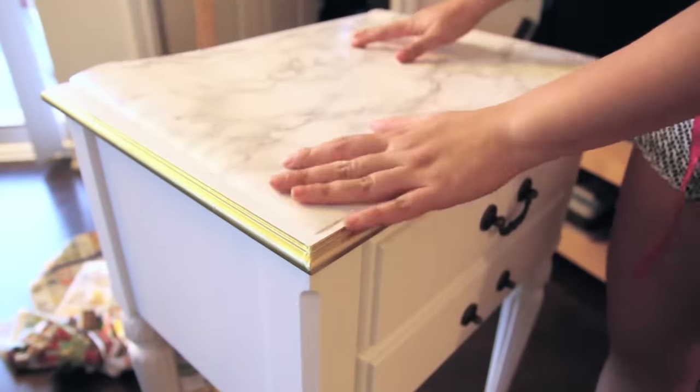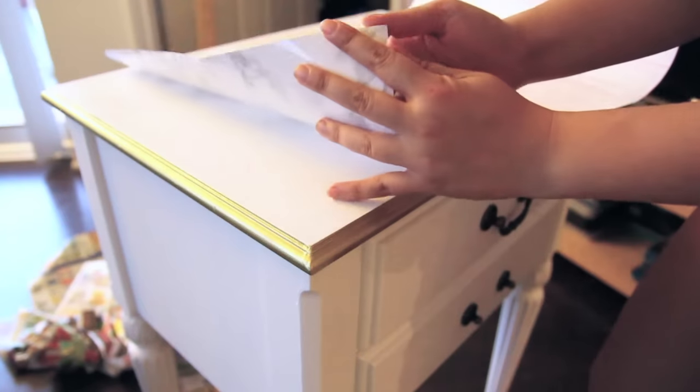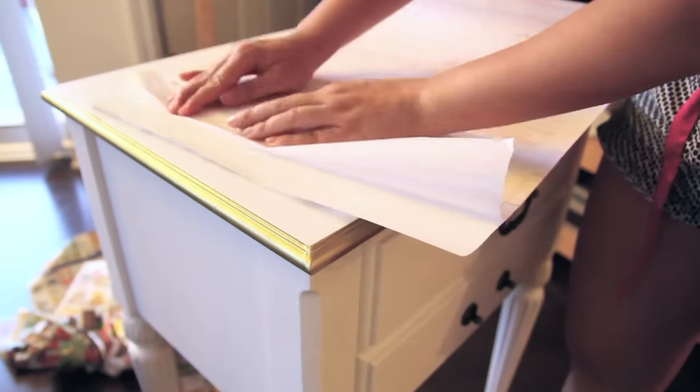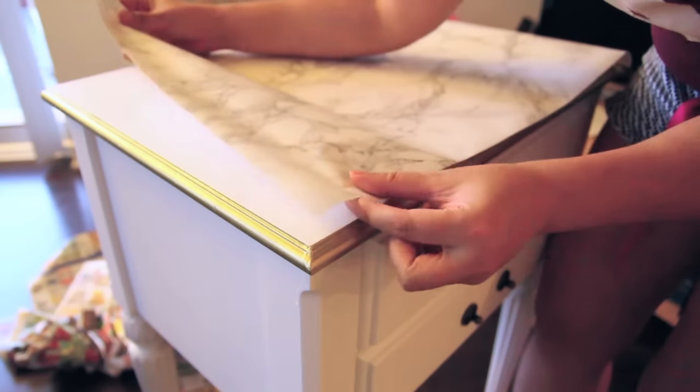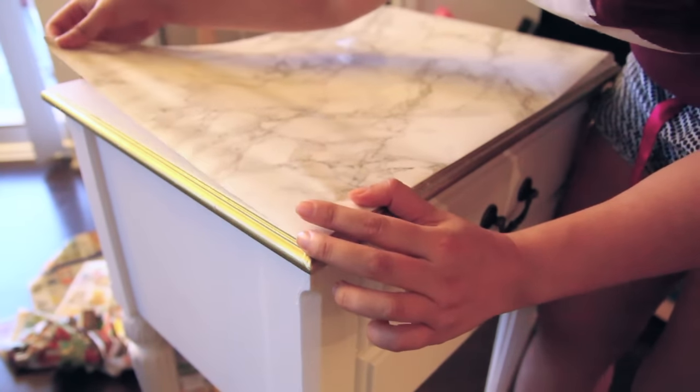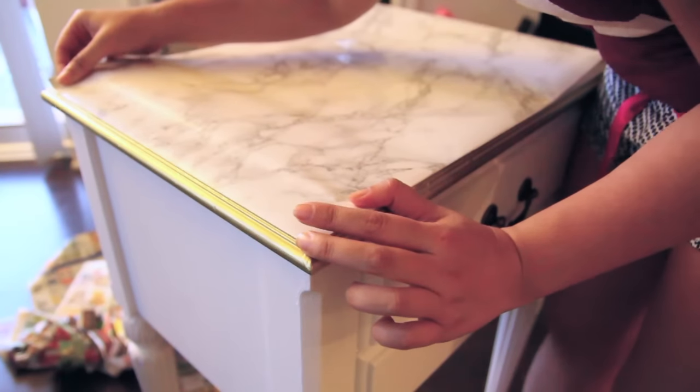So I have been obsessed with marble lately so I'm going to add some marble contact paper to the top of my table. Now you want to cut off a piece that is exactly the same size as the top of your table and then just pull back the lining on just the edge of the paper and then slowly stick that piece down.